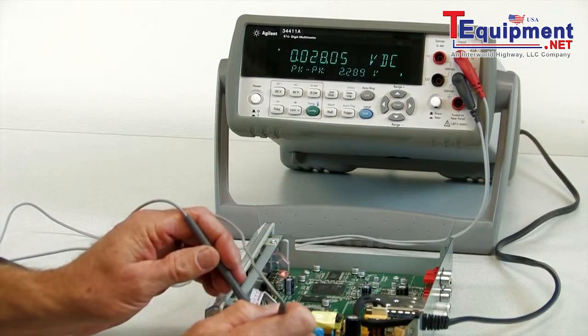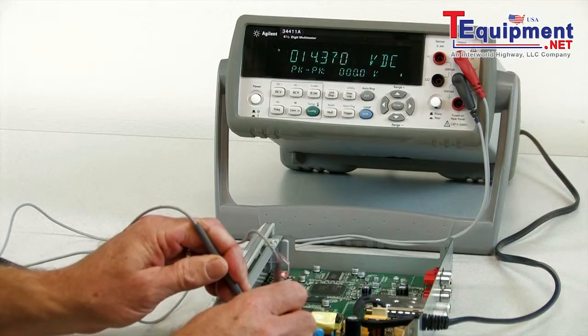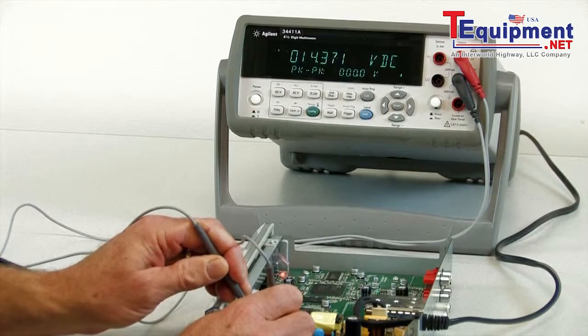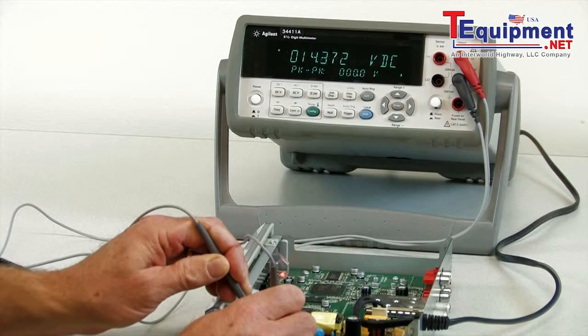We'll start by looking at the 12V supply. As you can see on the display, it's reading 14V DC, so it's a bit high. On the second display, you can see the AC component, so it doesn't have a lot of noise on it, which is what you'd expect.